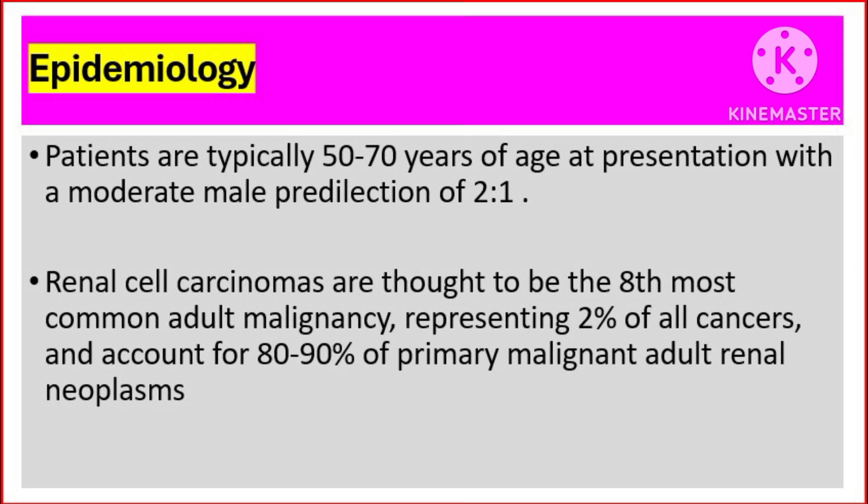Epidemiology. Patients are typically 50 to 70 years of age at presentation with a moderate male predilection of 2 to 1. Renal cell carcinomas are thought to be the eighth most common adult malignancy, representing 2% of all cancers, and account for 80 to 90% of primary malignant adult renal neoplasms.